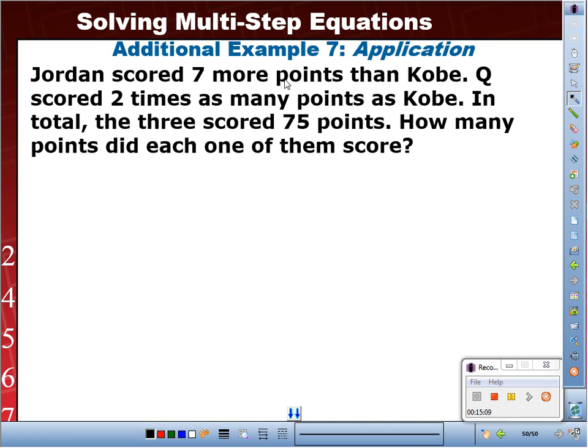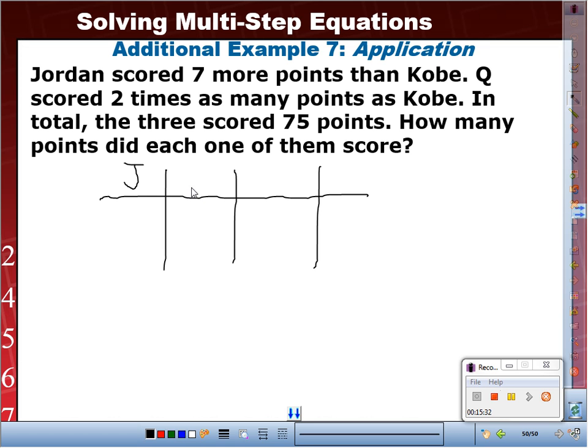Jordan scored 7 more points than Kobe. Q scored 2 times as many points as Kobe. In total, the 3 scored 75 points. How many points did each of them score? So, how many people are they talking about? 3. Remember the guess and check table? So, we draw three lines down. 1, 2, 3, and one across. We label the first column. The first person is Jordan. So, I'm just going to write J. Which is the next person that they mentioned? Kobe. Kobe, I write K. And then Q. And right here, total. What was the total points? 75.